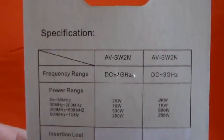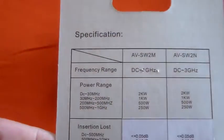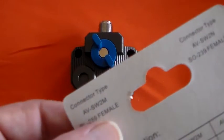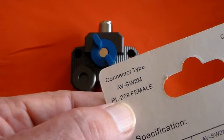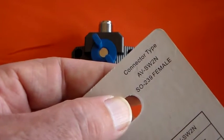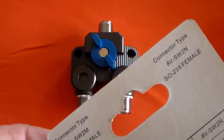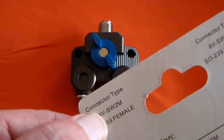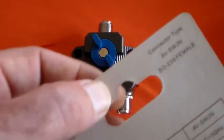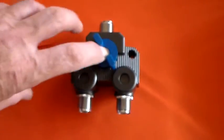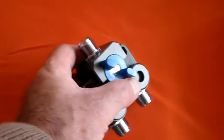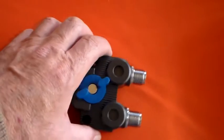These specifications by the way are identical for two different units. It says one is an AVSW2M which is a PL259 female and the other one is an AVSW2N which is an SO239 female. This is actually incorrect, the one I have is this one here, this is actually an SO239 which is a PL259 female. This should be an N female. So you've got the M for the 259 and you have an N for the N connector because they make an identical one but it's got N connectors on it instead of these SO239s or female PL259s as they're calling them.